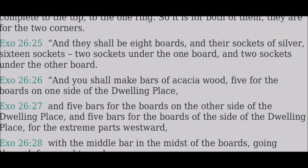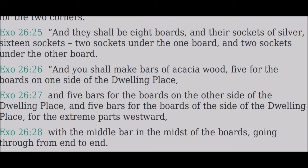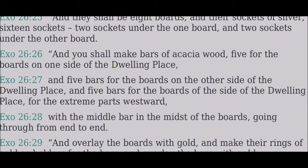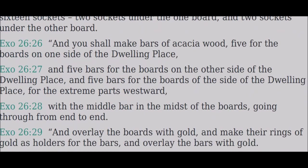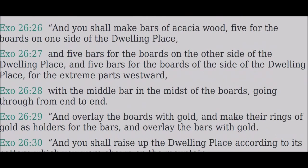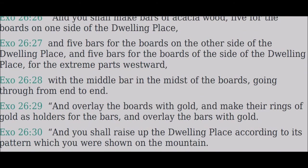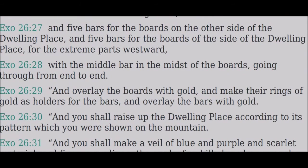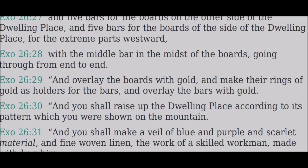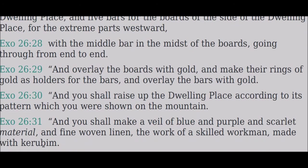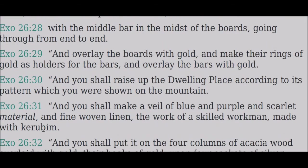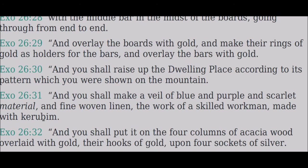Make bars of acacia wood — five for the boards on one side of the dwelling place, five bars for the boards on the other side, and five bars for the boards on the side of the dwelling place for the extreme parts westward, with the middle bar in the midst of the boards going through from end to end. Overlay the boards with gold, make their rings of gold as holders for the bars, and overlay the bars with gold. Raise up the dwelling place according to its pattern which you were shown on the mountain.